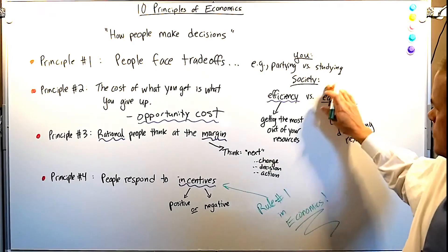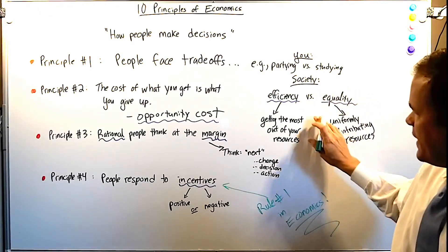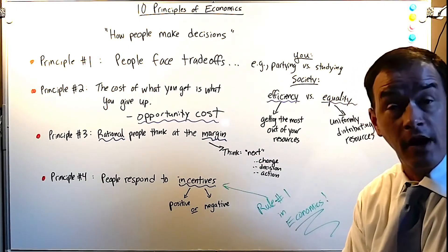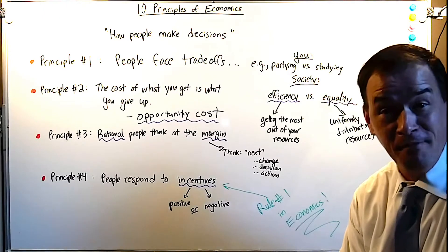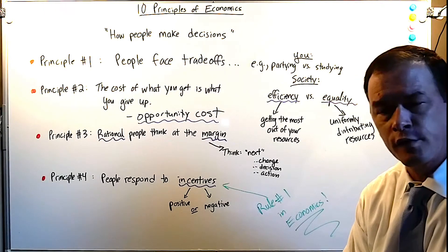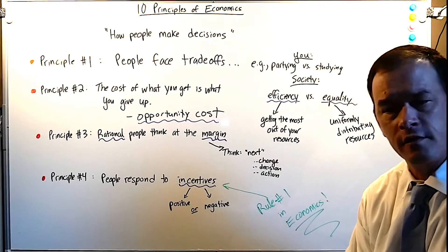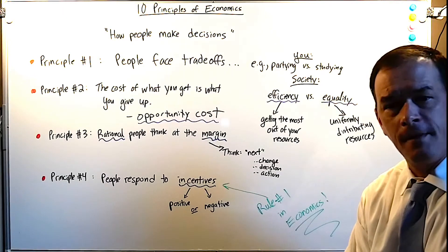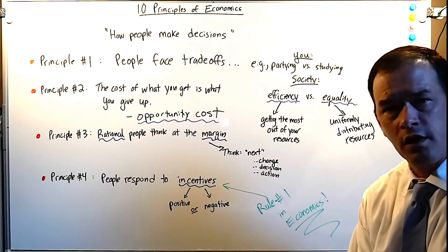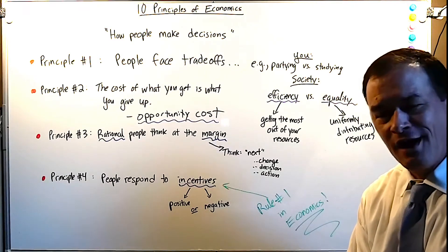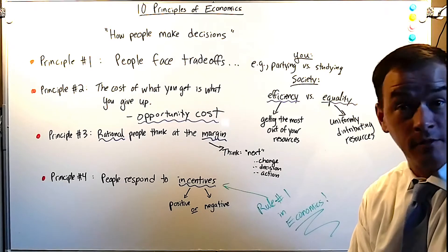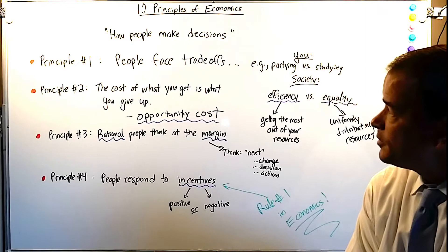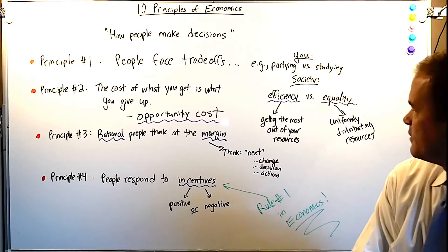Medical care tends to lean toward equality, but hospitals need some efficiency too because the power company still expects its bill paid. It's an interesting thought experiment. That's principle number one — people face trade-offs: partying versus studying, efficiency versus equality.